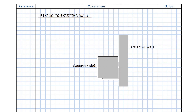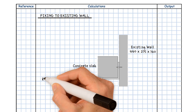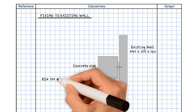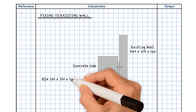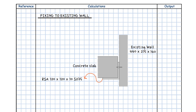The existing wall is made up of dense concrete blocks that measure 440 mm length, 215 mm height, and 140 mm width. The masonry support is a rolled steel angle 120 by 120 by 10, S275 steel grade. The orientation of the angle is leg horizontal.